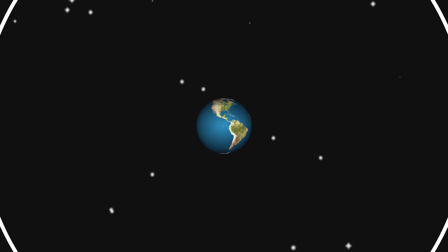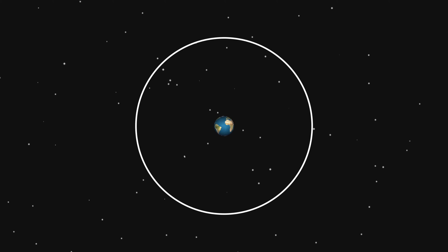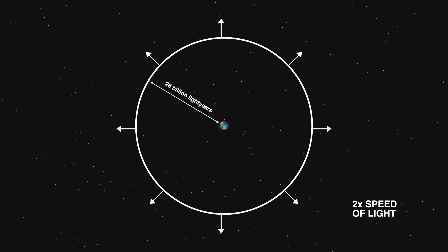This means that the surface of a sphere centered on the earth and with a radius of about 14 billion light years is moving away from us at the speed of light. It also means that bigger spheres are moving away from us faster than light. A sphere with a radius of 28 billion light years is expanding at twice the speed of light.